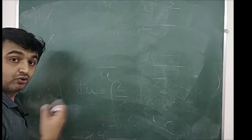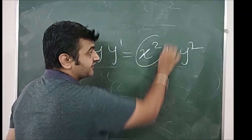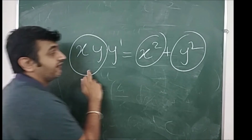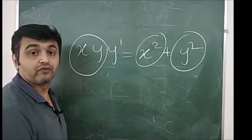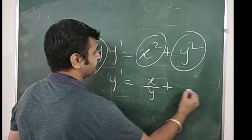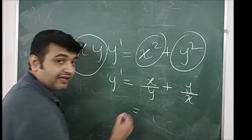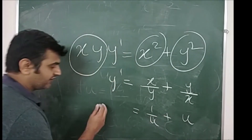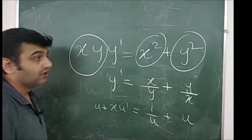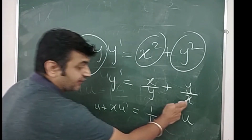Let me give you a trick for identifying homogeneous equations. Check whether each term has the same degree. For example, 4x² has degree 2, y² has degree 2, and xy has degree 1+1 = 2 — all terms have degree 2. Whenever all terms have the same degree, you can always reduce the right hand side to the form f(y/x). If you divide by x² and separate numerator and denominator, you get the expression purely in terms of y/x. So just check whether all terms have the same degree.